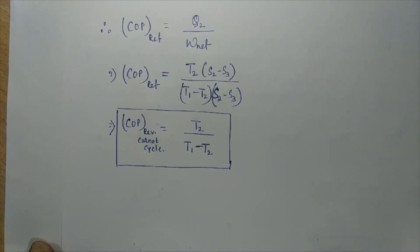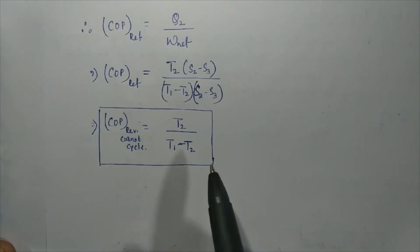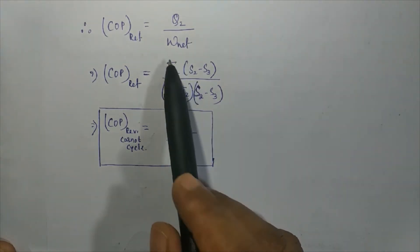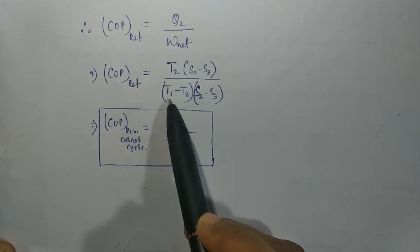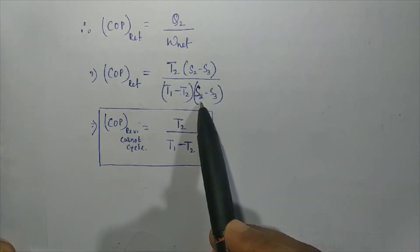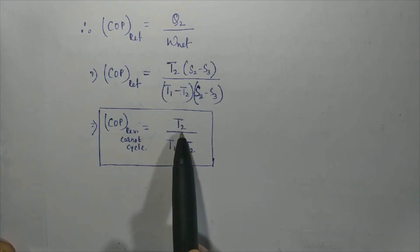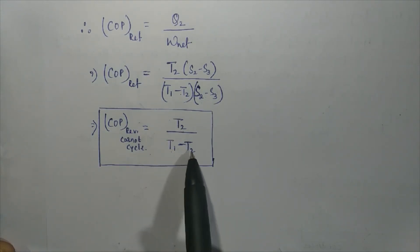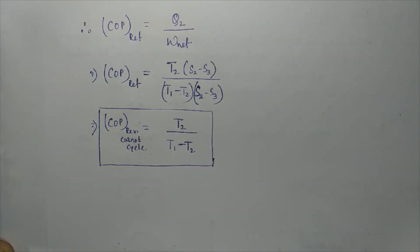The COP of the refrigerator equals Q2 divided by W_net. Substituting, COP = T2(S2 − S3) divided by (T1 − T2)(S2 − S3). The (S2 − S3) terms cancel, giving COP of reversed Carnot cycle = T2 divided by (T1 − T2). Just as the Carnot heat engine gives maximum efficiency, the reversed Carnot cycle gives the maximum coefficient of performance. It is also a hypothetical refrigerator.